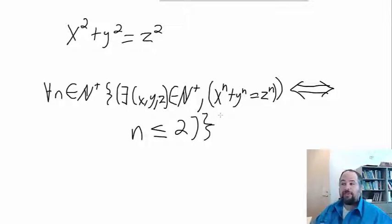By the same token, if n is less than or equal to two, then there exists an x, y, and z within the natural numbers such that x to the n plus y to the n equals z to the n, which means n cannot be greater than two. So it can't be three, four, five, six, all those other numbers we were looking at.